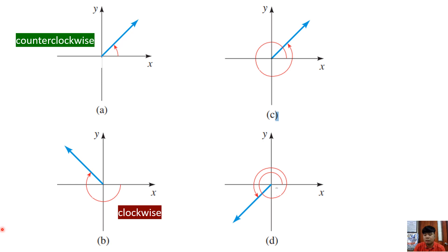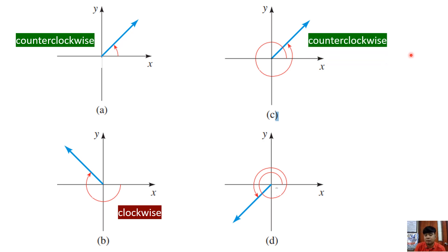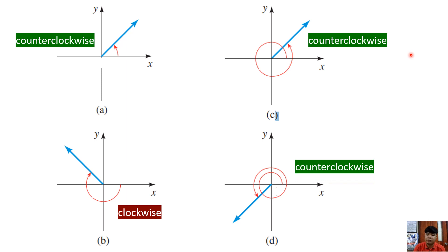In letter C, it moves counterclockwise, so that is still in standard position. And last, it's a counterclockwise rotation that provides a positive angle, and that is still considered an angle in standard position because we started from the positive x-axis.